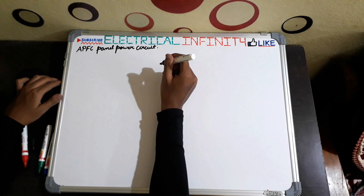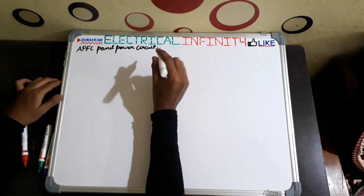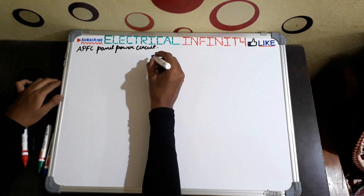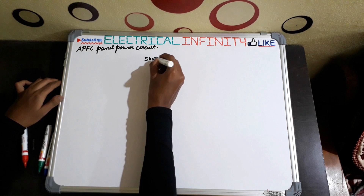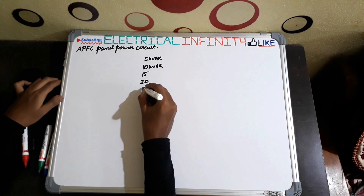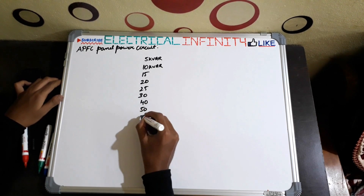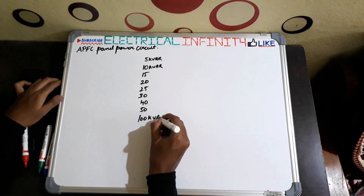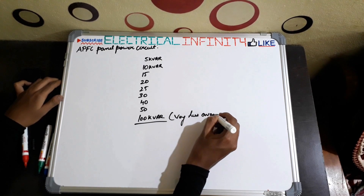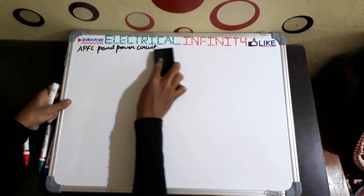Hello guys, welcome to a new video of Electrical Infinity. In this video I am going to teach you about APFC panel power circuit and explain it in detail. In an APFC panel we use capacitors, so first I am going to show you the standard sizes of capacitors: 5 kVAr, 10 kVAr, 15, 20, 25, 30, 40, 50 kVAr, and last is 100 kVAr. The 100 kVAr capacitor is very rarely available.